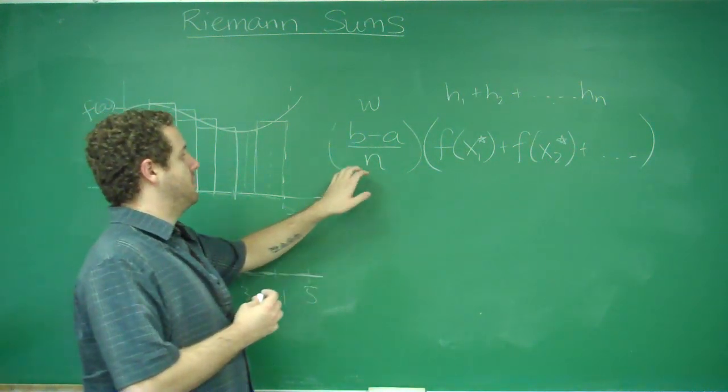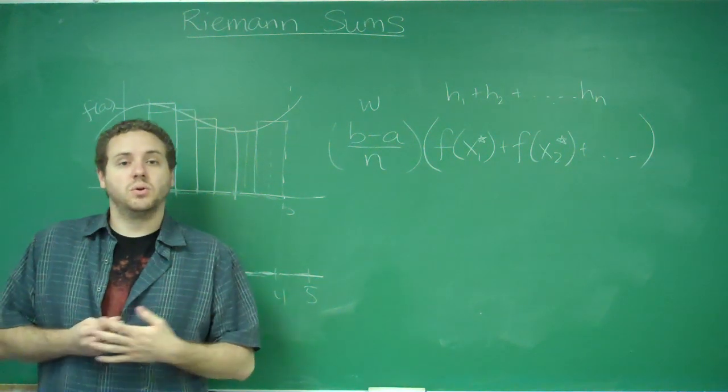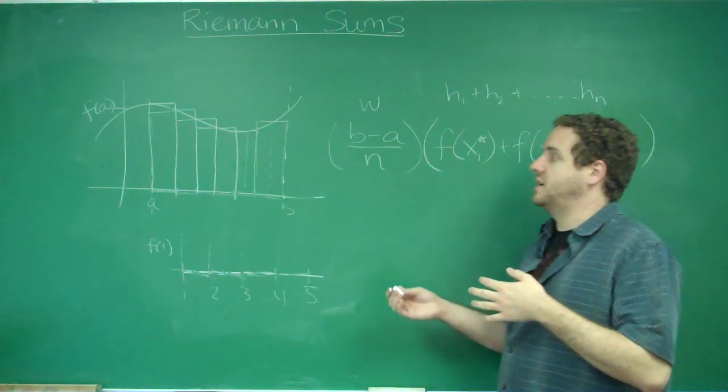You add all of those up and multiply them by the width of every rectangle, and that gives you your total approximation in terms of the area. And this is how you calculate a Riemann sum.